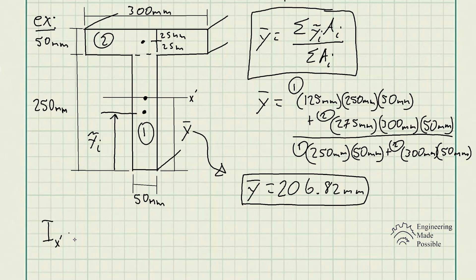Going back, we had the equations for the moment of inertia of simpler geometry — for a rectangle as well as a circle. But for a T-beam, similar to finding the centroid of composite areas, we have to solve for the area moment of inertia of each simple geometry and then add them up to get the actual area moment of inertia for the entire T-beam.